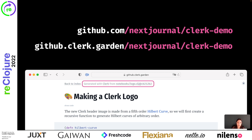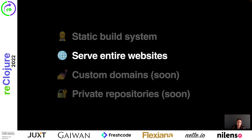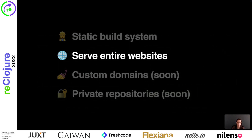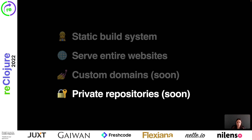Garden is an easy-to-use static build and hosting system for Clerk notebooks that for now works together with GitHub, and you can serve entire websites from it. In fact, Clerk's homepage and Garden's homepage are both fully customized Clerk notebooks built and published with Garden. Eventually, you could do the same for your own website. To that end, we will be shipping public support for custom domains soon, and along with that, we will also release support for building private GitHub repositories, so your source does not have to be public eventually.